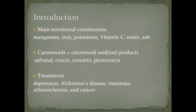The main allelochemicals in saffron are safranal, which is responsible for the aroma; crocin and crocetin, which are responsible for the color; and picrocrocin, which is responsible for the bitter taste. Saffron is used in the treatment of depression, Alzheimer's disease, insomnia, atherosclerosis, and cancer.